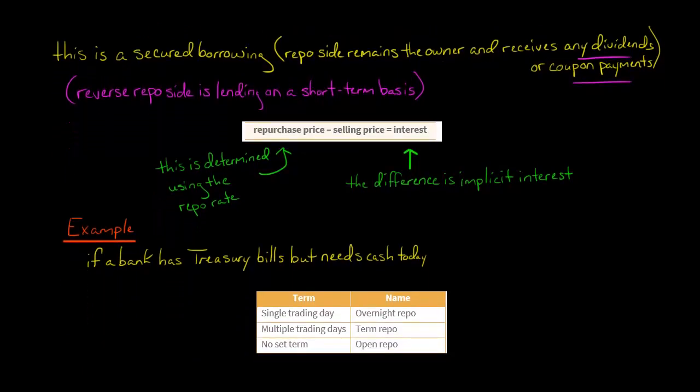An example: let's say a bank had some treasury bills and just needed some cash for the next day overnight. They didn't want to unload the treasury bills permanently, so they sell them on the repo market and get to buy them right back, having funds for that day or two days or whatever period they needed.